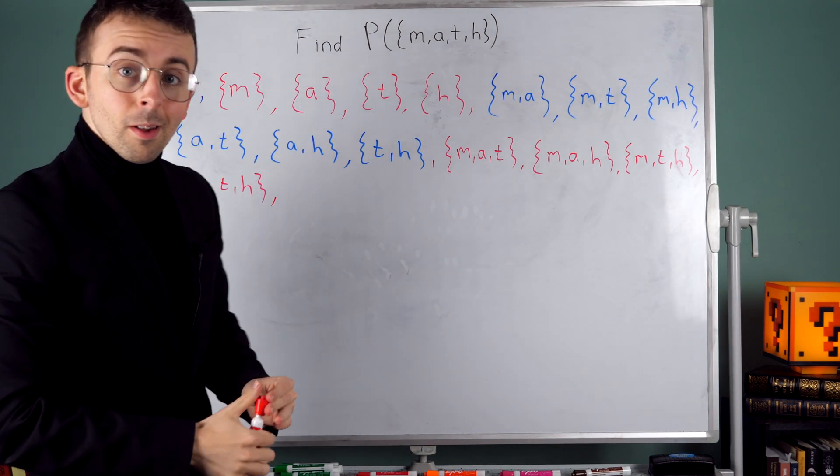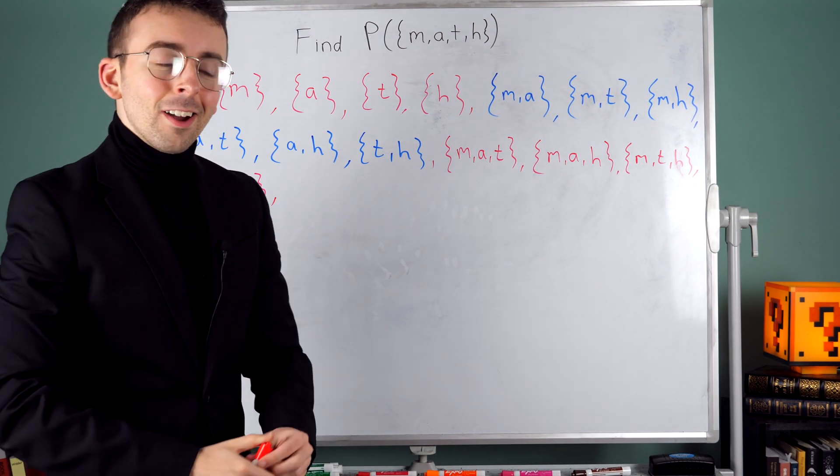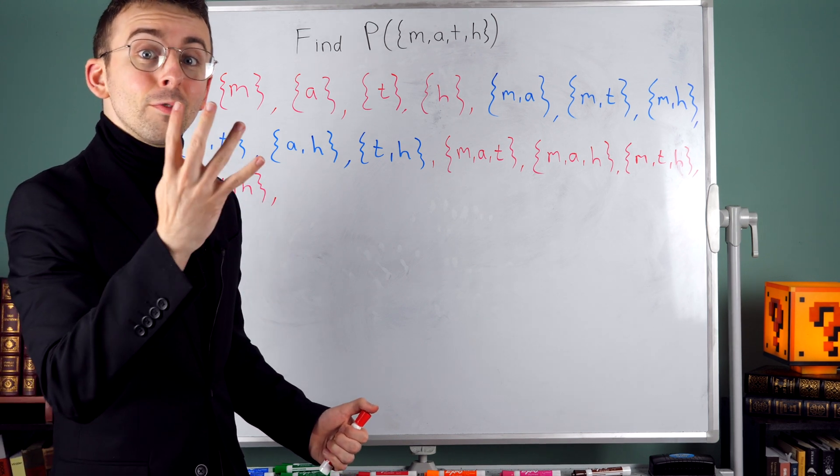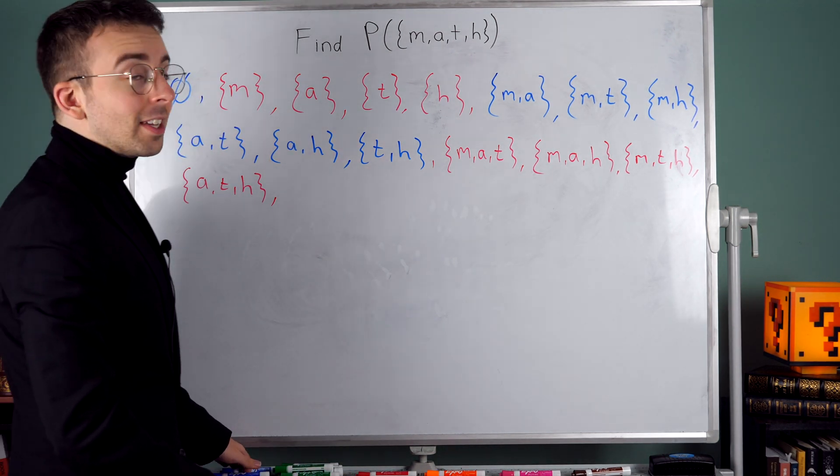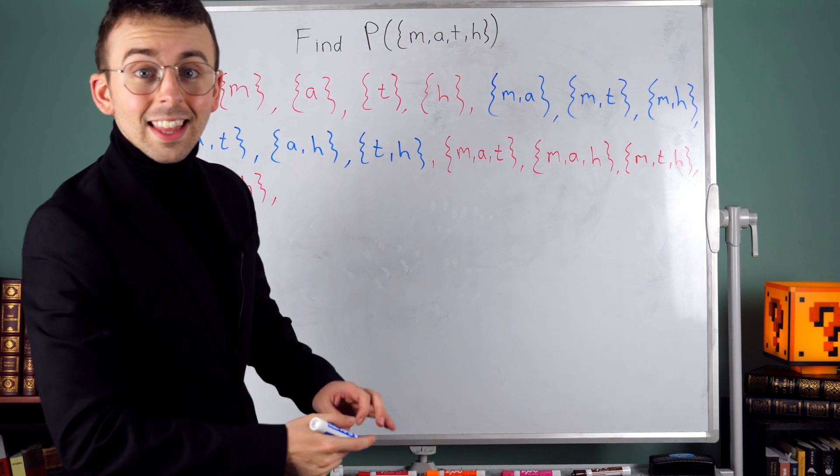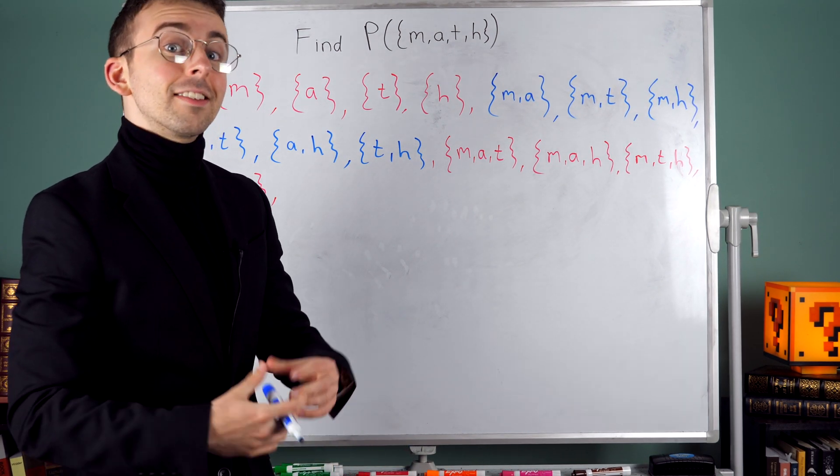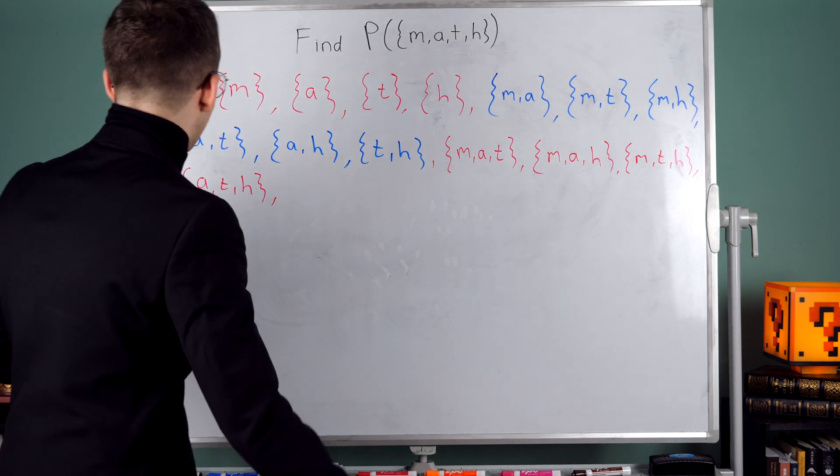All right, all that's left now are the subsets that have four elements, and I'm in for a nice easy ending because there's only one subset that has four elements since the original set itself only has four elements.